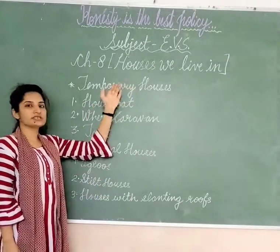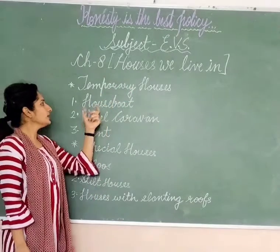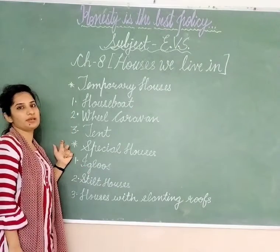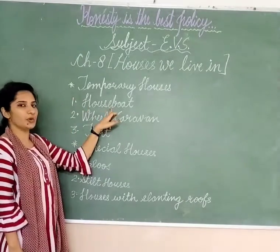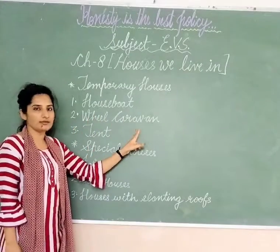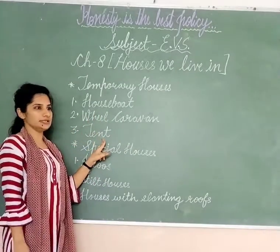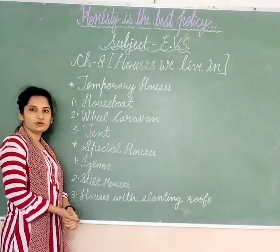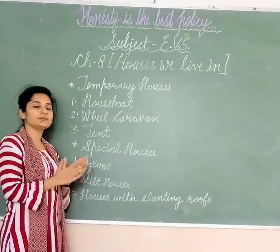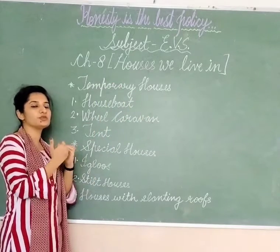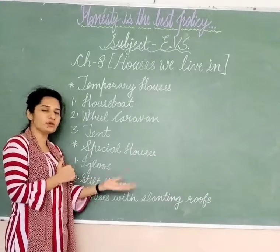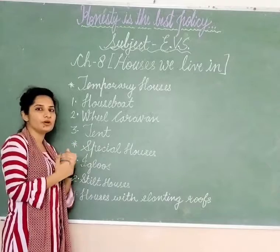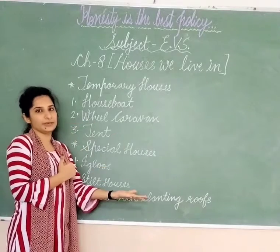Temporary houses also have some types. There are three types of temporary houses: first, houseboat; second, wheel caravan; third, tent. Temporary houses are those houses that can move from one place to another place.